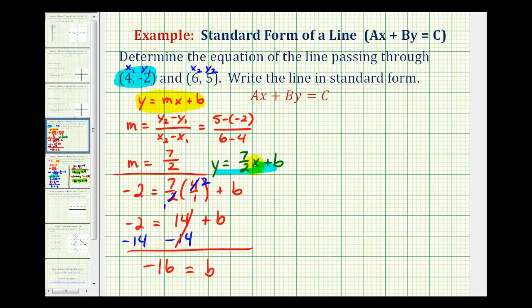Again, using this equation here, we can now substitute negative sixteen for b. So in slope-intercept form, the equation would be y equals seven-halves x minus sixteen.